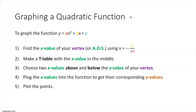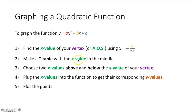To graph a function in the form y equals ax squared plus bx plus c: first, find the x value of your vertex using x equals negative b over 2a. Then create a t-table with that x value in the middle, choose two x values above and two below, plug all five x values into the original function to get y values, then plot the five points.